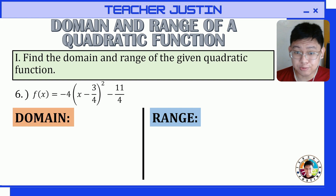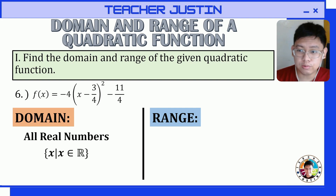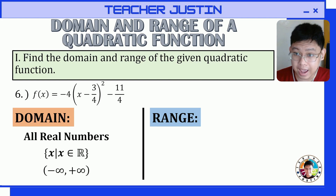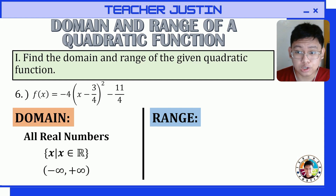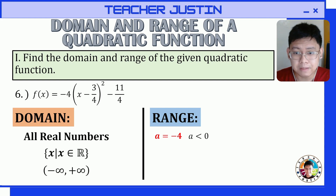Let's find the domain and range of this quadratic function written in vertex form. The domain for any quadratic function will always be all real numbers: x such that x is an element of all real numbers, or in interval form from negative infinity to positive infinity. Domain refers to the values of x. For the range, we identify the orientation. The value of a in this quadratic function is negative 4. Comparing to 0, since a is less than 0, the graph opens downward.